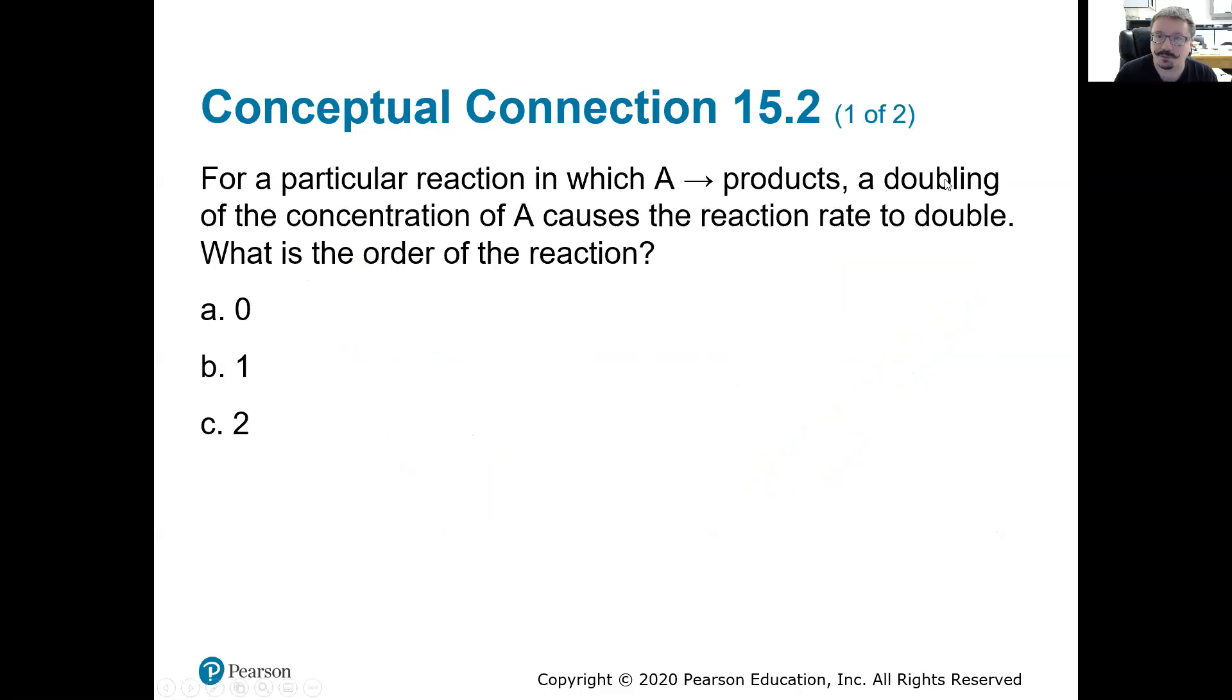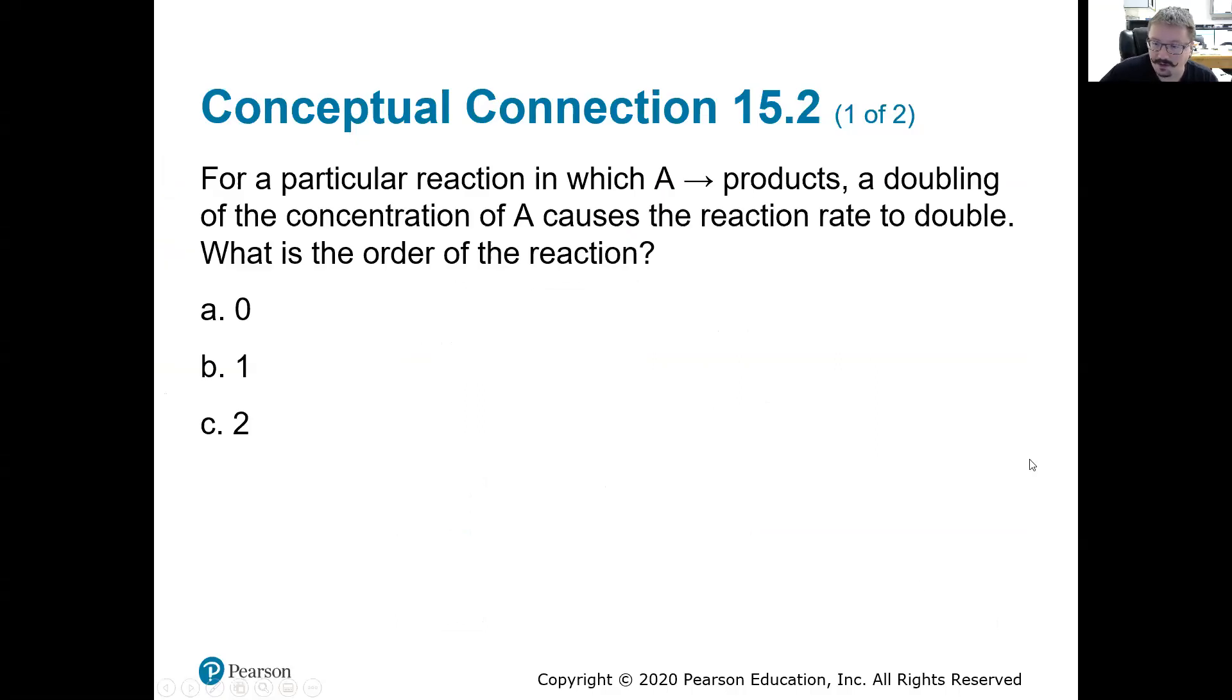For a particular reaction where A goes to products, a doubling of the concentration of A causes the reaction rate to double. What is the order of this reaction? We can write that out. What did the rate do? The rate doubled and our concentration doubled raised to some power. What would n have to be in this case? We have rate equals concentration raised to the n. If one doubles and the other doubles, what's n have to be? N has to equal one in this case. So we could tell in that way that the reaction is first order or should be first order with respect to A. There's our order with respect to A by knowing what changing the concentration specifically does to the rate. Does doubling it double the rate also or have no effect or quadruple it?